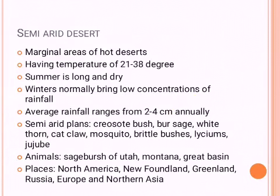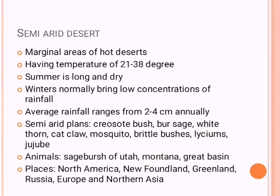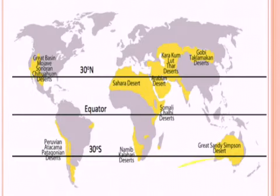Semi-desert areas occur at 21 to 38 degrees temperature, in marginal areas of hot deserts where summer is long and dry, and winters bring some concentrated rainfall — because it is semi-arid, somewhat arid but somewhat wet too. Average rainfall is somewhat better than hot deserts, at 2 to 4 centimeters annually. Semi-arid plants include species found in Montana, Great Basin, and sagebrush areas. Locations include North America, Newfoundland, Greenland, Russia, Europe, and Northern Asia.